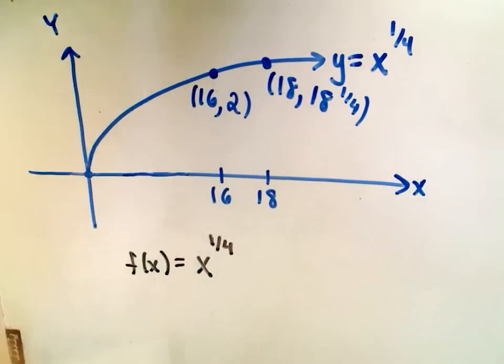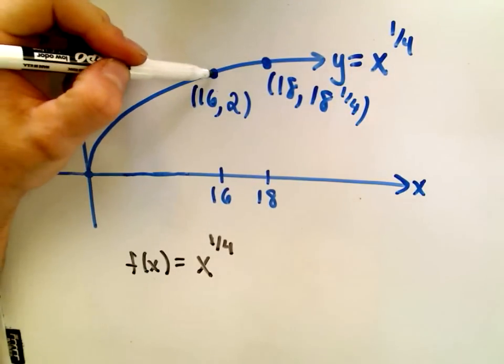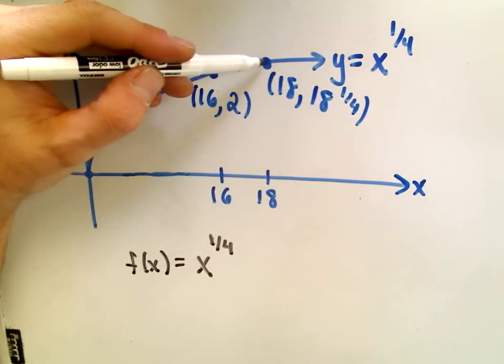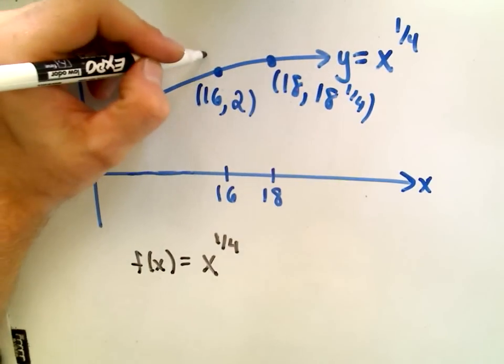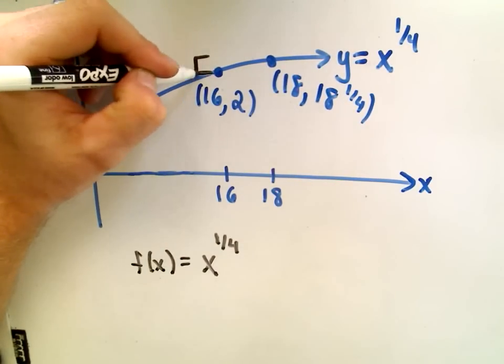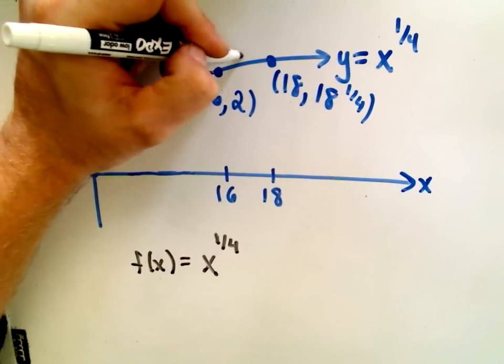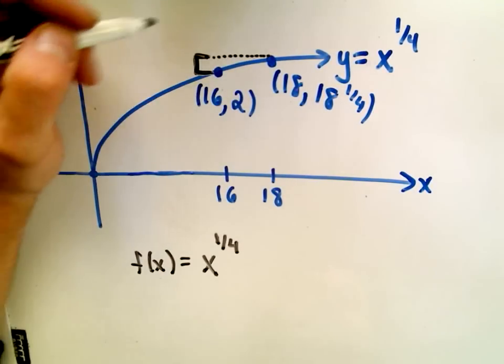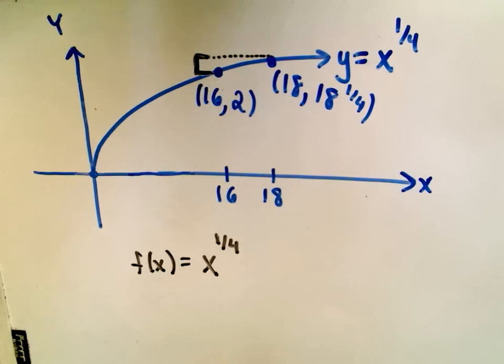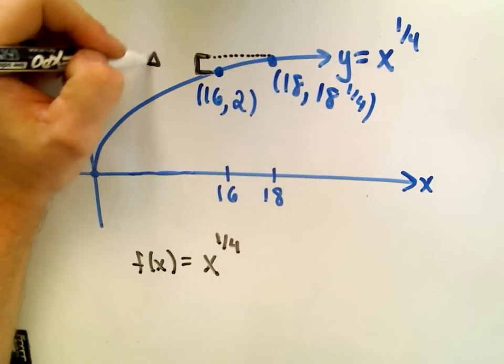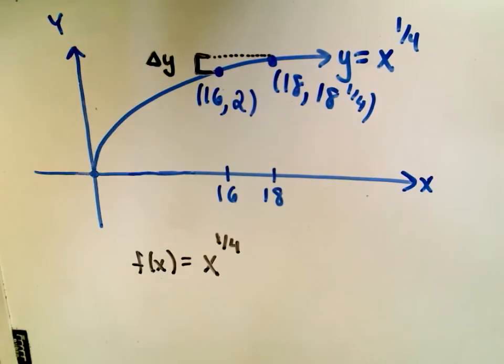I'm at a height of 2, that's the y value, and I go up to this height of 18^(1/4). This change in height in going from 2 up to 18^(1/4), this is what we call Δy. So this is the true change in y.